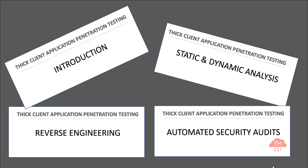We will slowly move on to reverse engineering topics where we are going to discuss how to perform reverse engineering on thick client applications to disassemble and decompile them, followed by patching exe files by modifying C-sharp .NET's IL code. Finally, we'll go through some low-hanging fruits followed by automated security audits. This section of the course also covers a tool called Visual Code Grepper to perform source code scanning of C-sharp .NET applications.